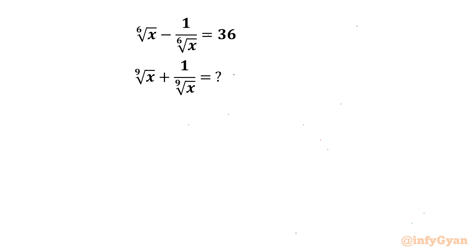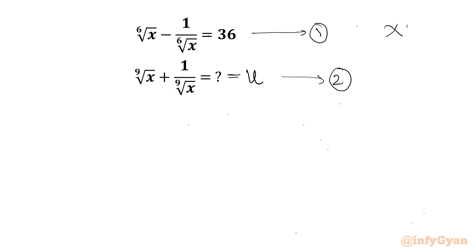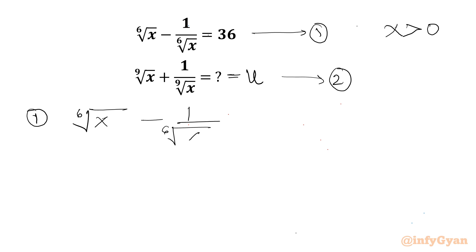Let us consider this expression equal to u. I will call the given equation number 1 and the expression to evaluate equation number 2. Of course x must be greater than 0. Now I will write our first equation: 6th root of x minus 1 over 6th root of x, equal to 32.